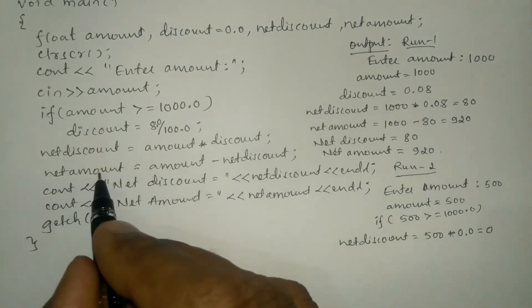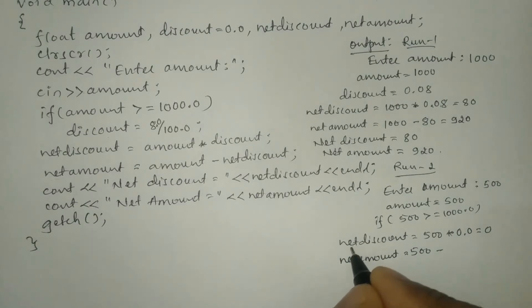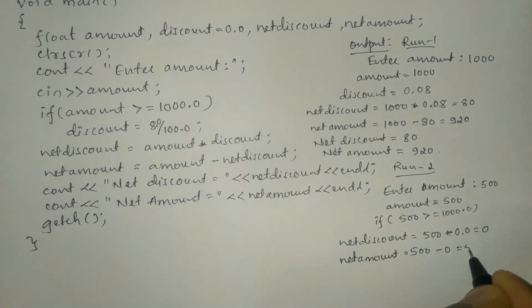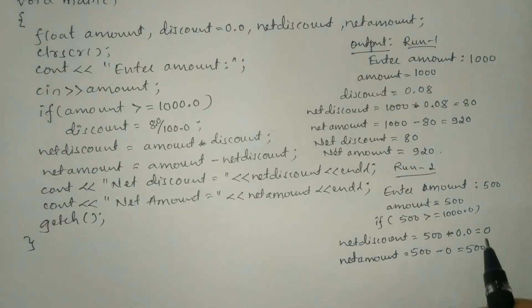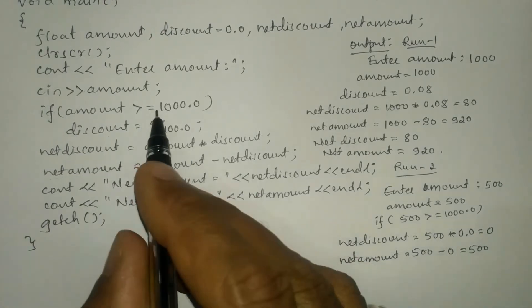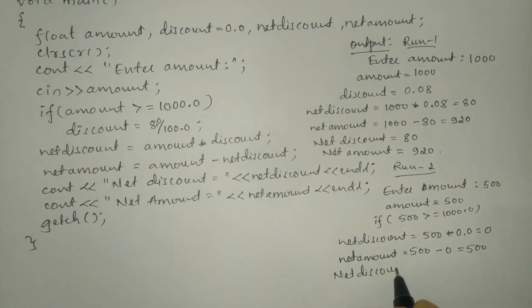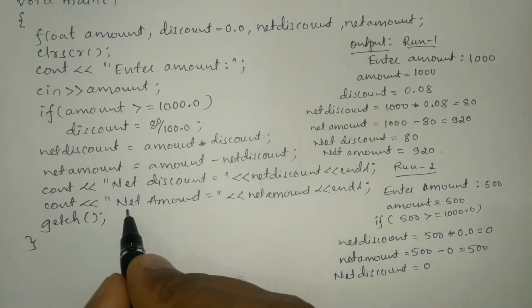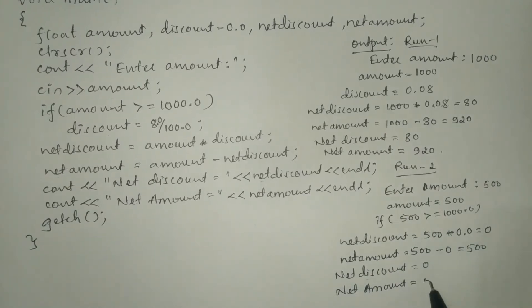Next, net_amount equals amount minus net_discount: 500 minus 0 gives 500. This is the net amount payable by the customer without any discount because the amount is less than 1000. The output will print: net discount = 0, and net amount = 500.